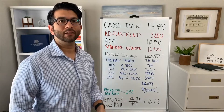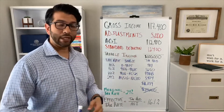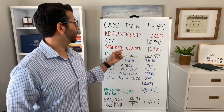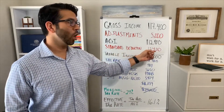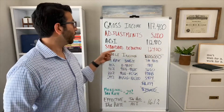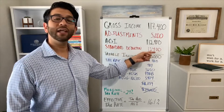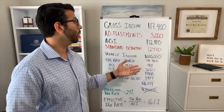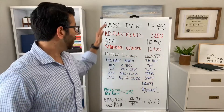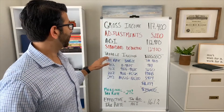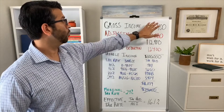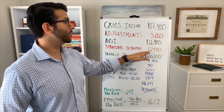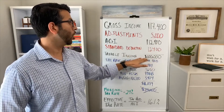You now have the decision to take the standard deduction or you can itemize your deductions. With the Tax Cuts and Jobs Act, the standard deduction was increased quite a bit, so it's difficult for most Americans to get itemized deductions above that amount. So if your itemized deductions are less than the standard deduction, you'll take the standard deduction — which is what this taxpayer did.